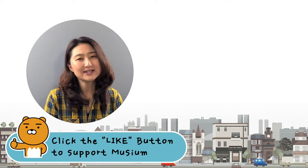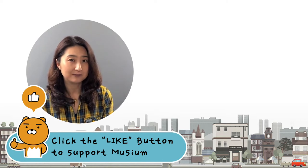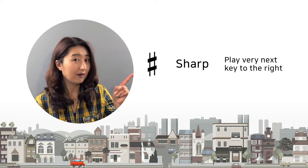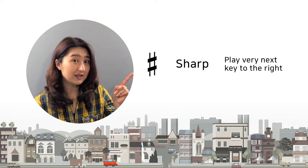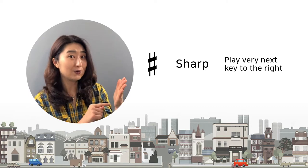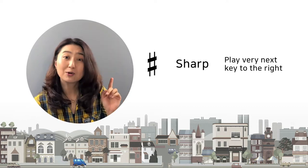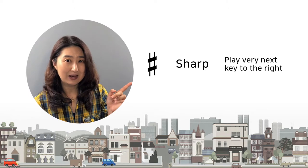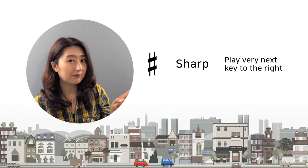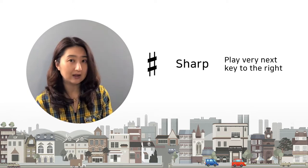Now let's see what sharps, flats, and naturals are. First, sharp. Have you ever seen this sign before? This one can be found on phones too. People call it the pound sign, but we call it the sharp sign. Whenever you see this sign, you have to play the very next key to the right on the piano.